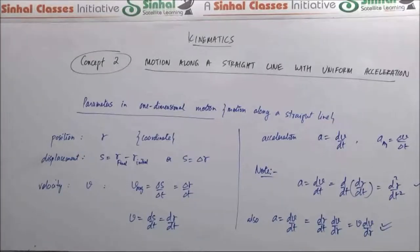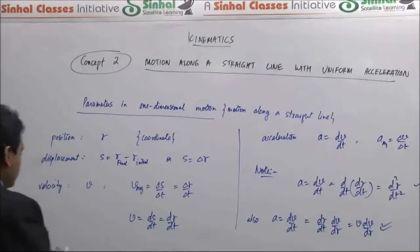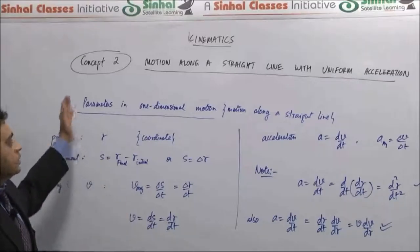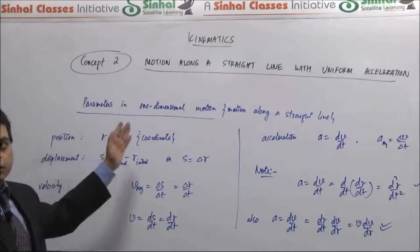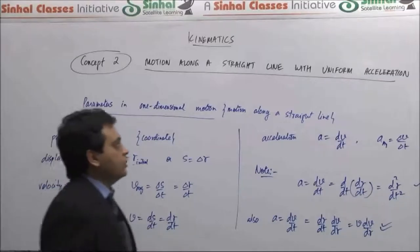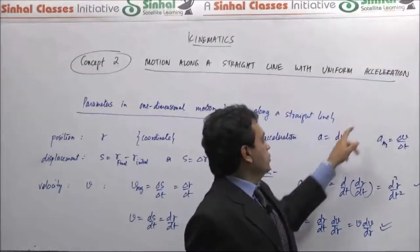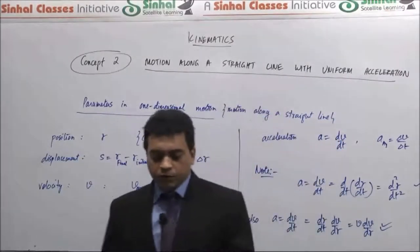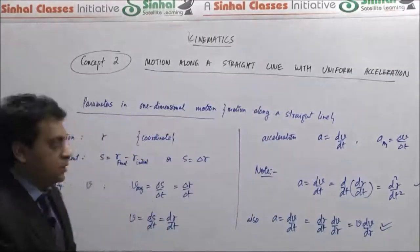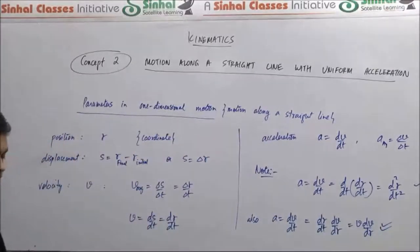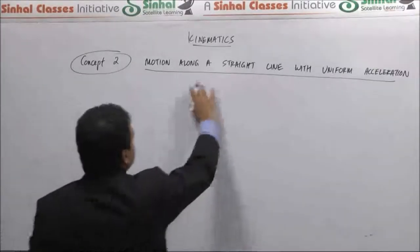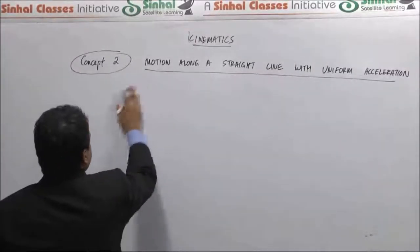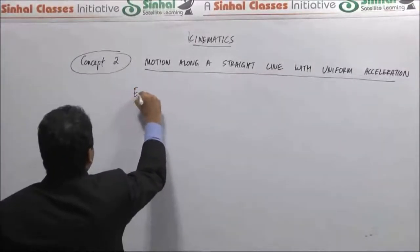These are the parameters we'll use throughout our study of motion along a straight line. What we are studying now is a special case where acceleration is uniform, so this rate of change is constant. Let's look at the equations of motion for uniform acceleration along a straight line.